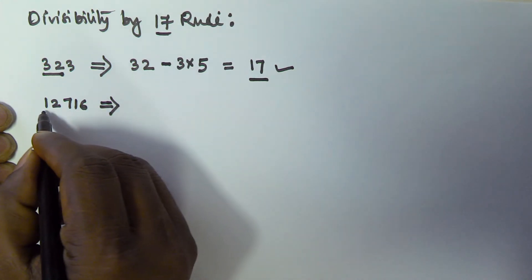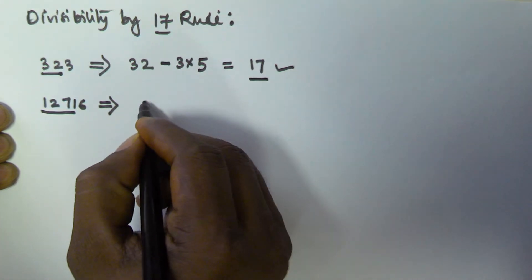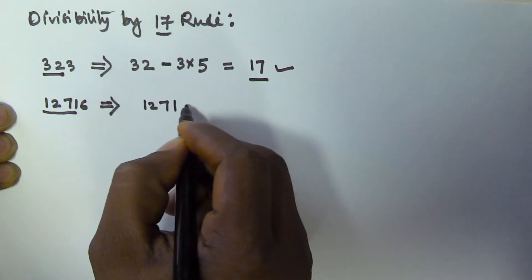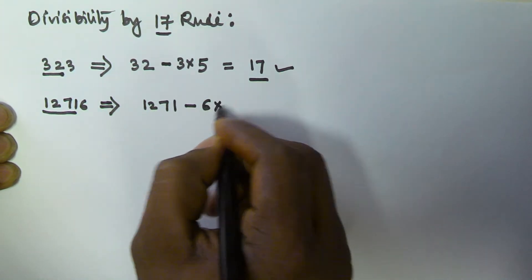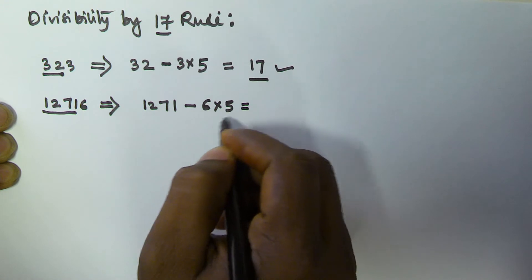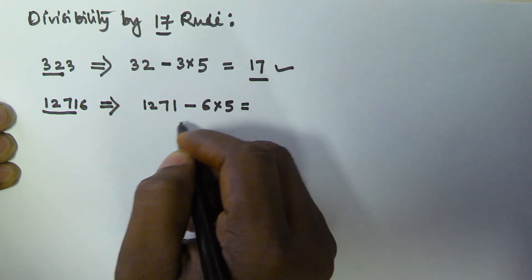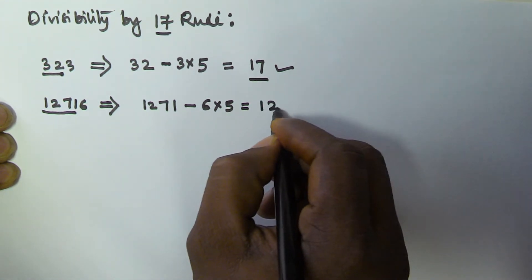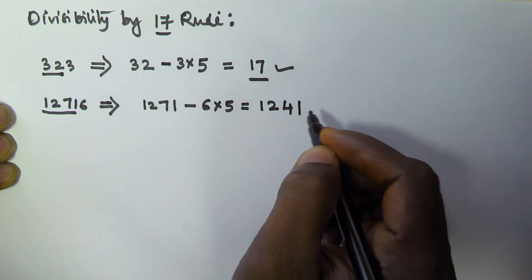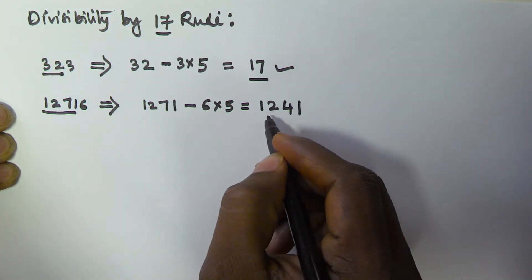For that, we take all the digits except the unit digit, that is 1271, minus the unit digit times 5. So 6 times 5 is 30, which gives us 1241. Again, we do not know if this one is divisible by 17 or not.